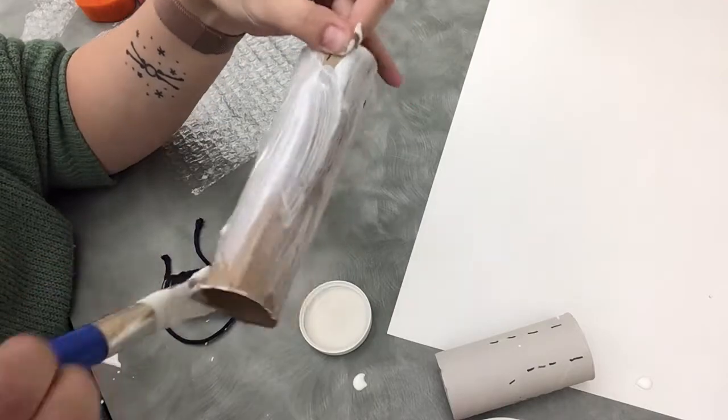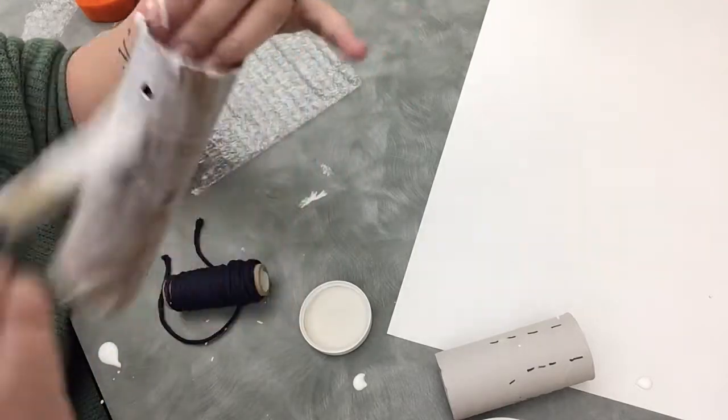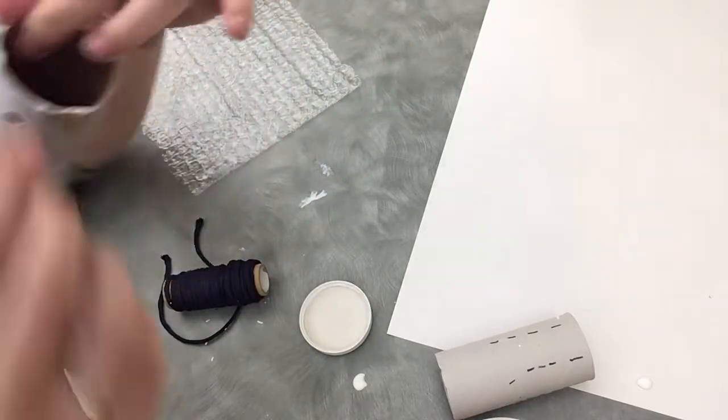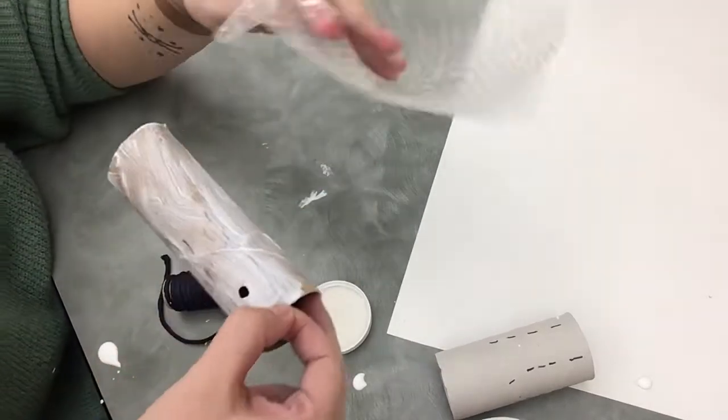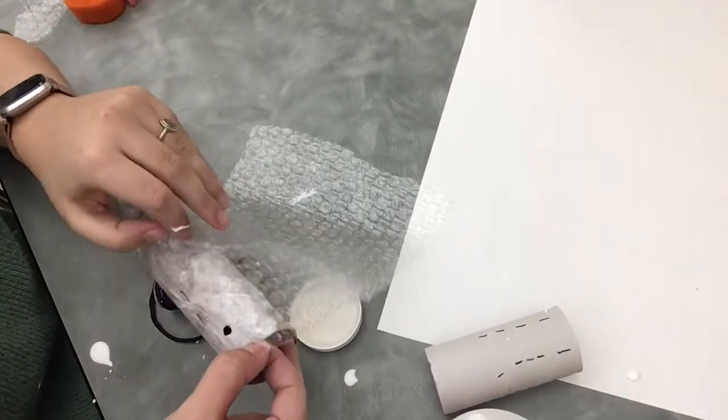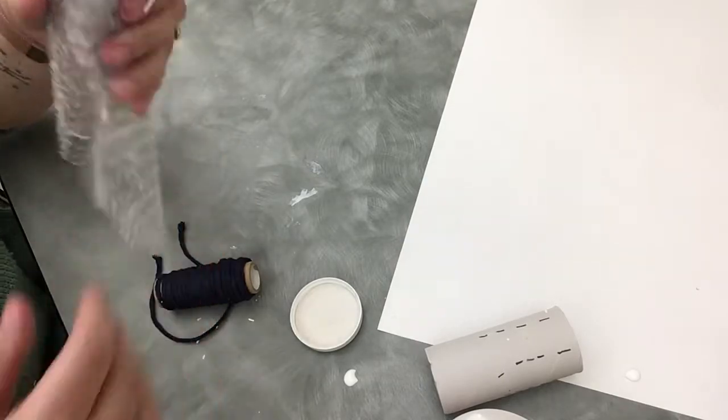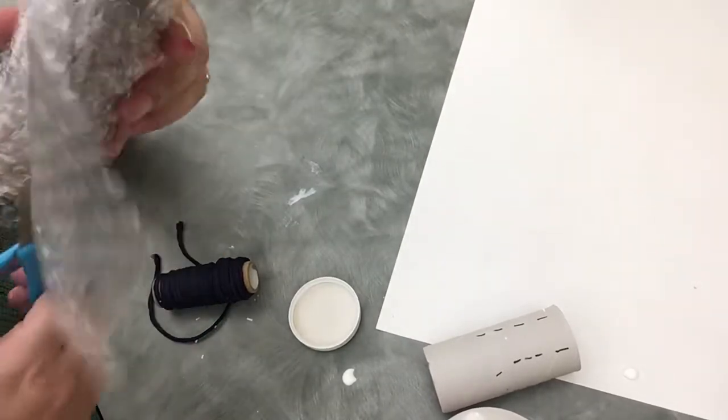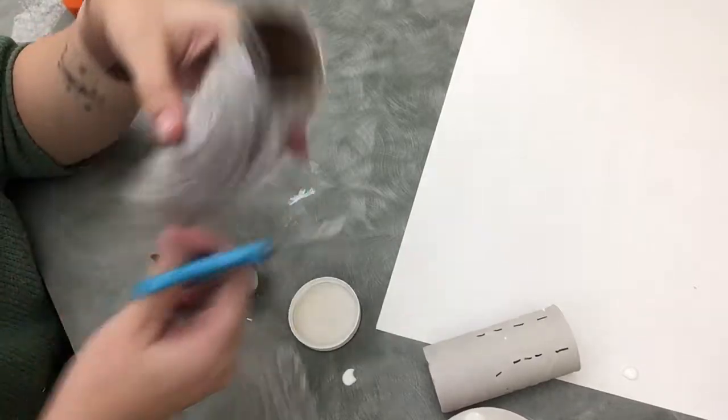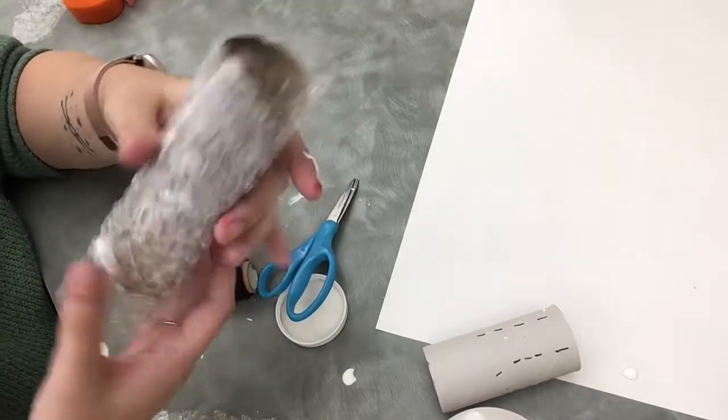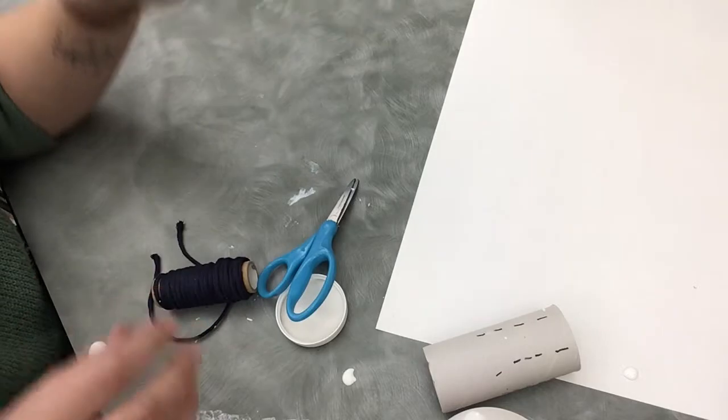And we're gonna do the same thing that we did with the string. We are going to just very carefully make sure that the bubbles are facing out. And we are gonna roll this up. And then I'm gonna snip this part off because it's too long. So we've got two of them now. We've got two stamps. And we're gonna let them both dry.